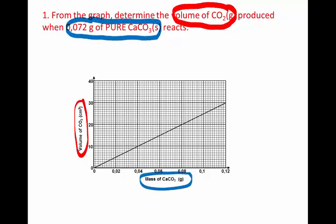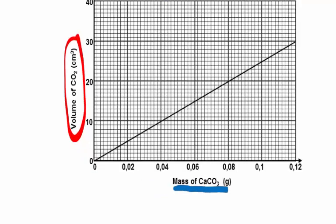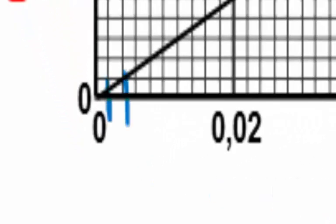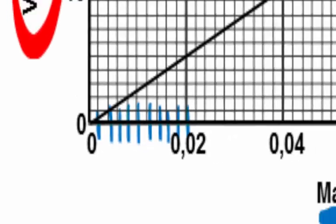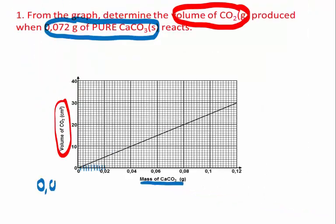So all we need to do is read the graph. The only difficult thing is understanding the scale of the graph. We can see that there are 10 divisions, standing for 0.02. So each division stands for 0.002.